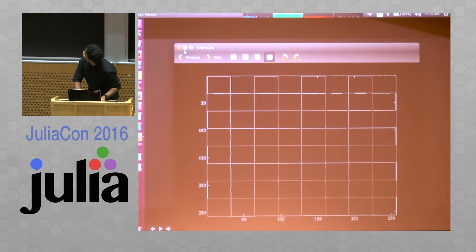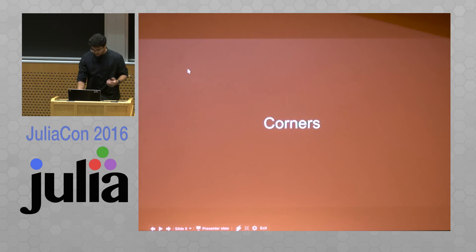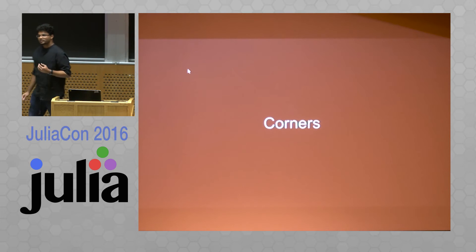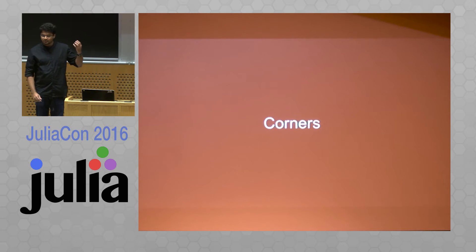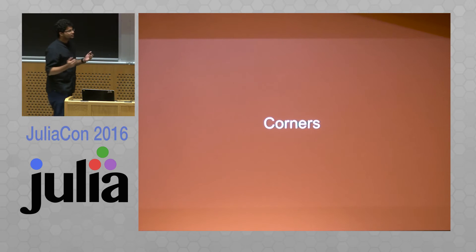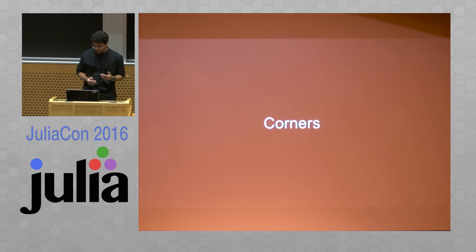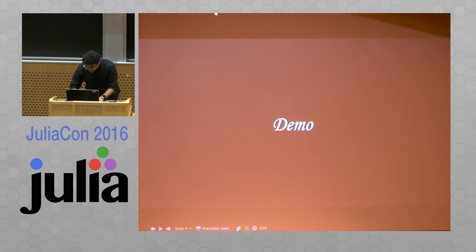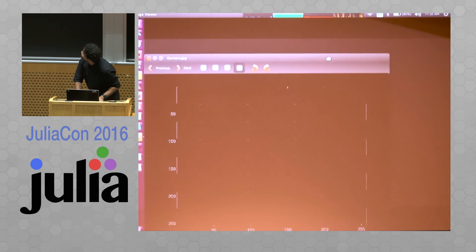Now I'll move on to a better feature than edges, which is corners. In corners, what happens is you can detect the key point if it's seen again. But what if the image is rotated? It would fail. But still you can use corners. Now I'll show you the corners demo, which I have for the same chessboard image. These are the corners in this image.